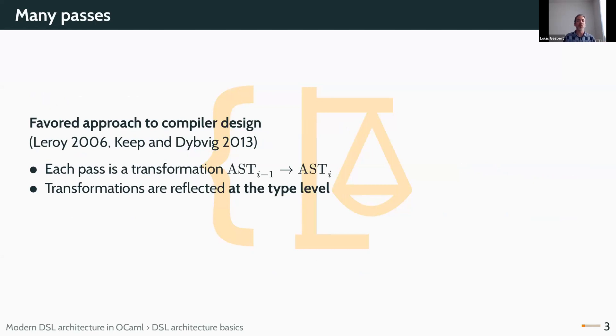The generally accepted way to design compilers and DSLs is to use many passes, with each pass transforming from one AST to the other. The point being that you can reflect the construction of your compiler and the transformations at the type level. Typically, you will have ASTs that will be pretty similar to their neighbors, and a targeted pass that will just translate a few nodes from one to the other.